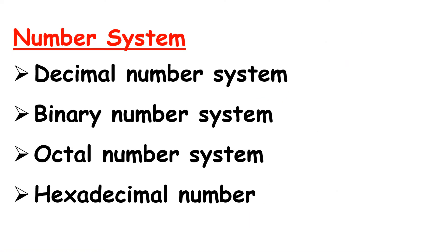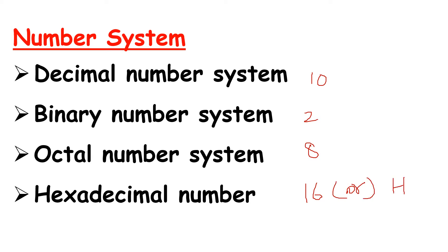This is the number system. First one is the decimal number system, second one binary number system, third one octal number system, fourth one hexadecimal number system. The base values are: decimal 10, binary 2, octal 8, hexadecimal 16.